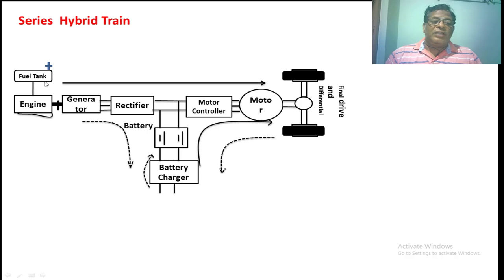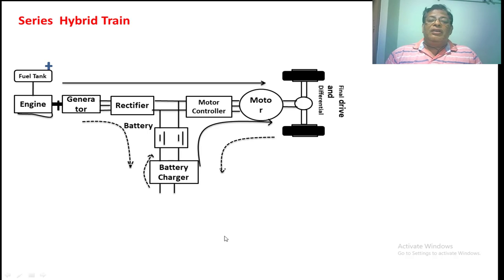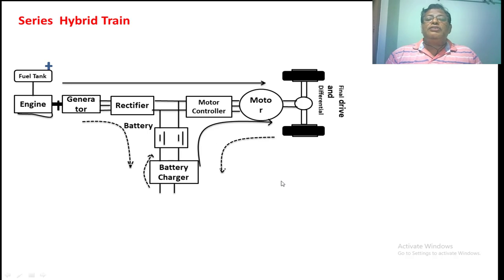In the fourth mode, the IC engine gives propulsion power to the vehicle and also charges the battery simultaneously. In the fifth mode — regenerative braking — whenever we apply braking, the speed decreases and kinetic energy drives the motor. The motor operates as a generator, giving electrical output that is stored in the battery, since the IC engine does not receive that power. The last mode is hybrid charging, where the battery is charged through the IC engine while the vehicle is also moving.